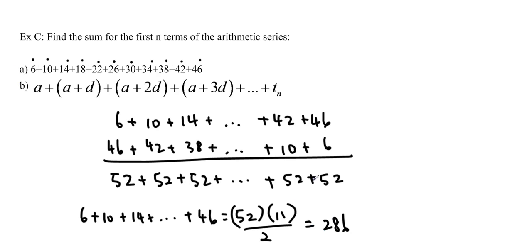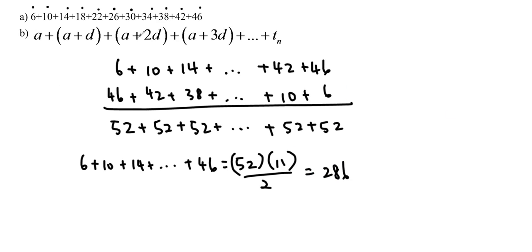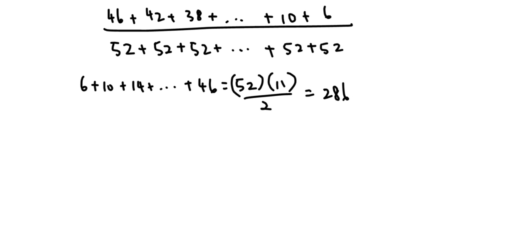Now we can do this again with example B, and instead of having numbers, we've got these letters or variables, but that's okay. We can do it in exactly the same way. So we start with a plus a plus d, which is term 2, plus a plus 2d, and so forth, until we get to the T sub n, which we know is a plus (n-1) times d.